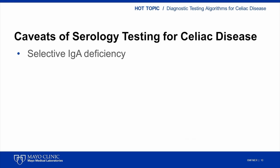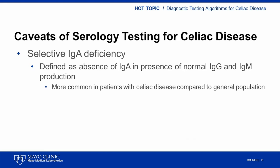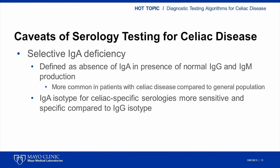For serologic testing, we must deal with the issue of selective IgA deficiency, generally defined as the absence of detectable IgA immunoglobulin in the presence of normal IgG and IgM production. Although relatively rare, it is more common in patients with celiac disease compared with the general population. The IgA isotype for celiac-specific serologies is more sensitive and specific compared to IgG isotypes, so IgA antibodies are preferred. However, for patients with selective IgA deficiency, testing for IgG isotype antibodies is necessary.